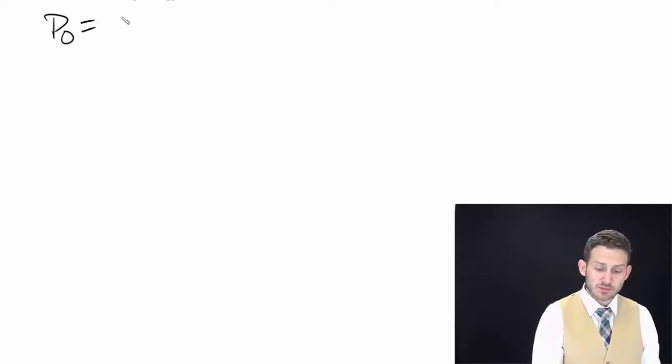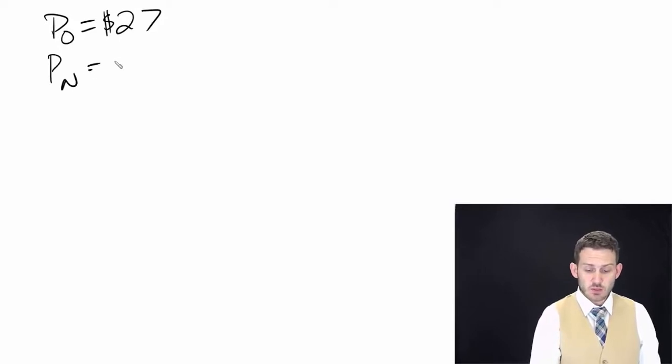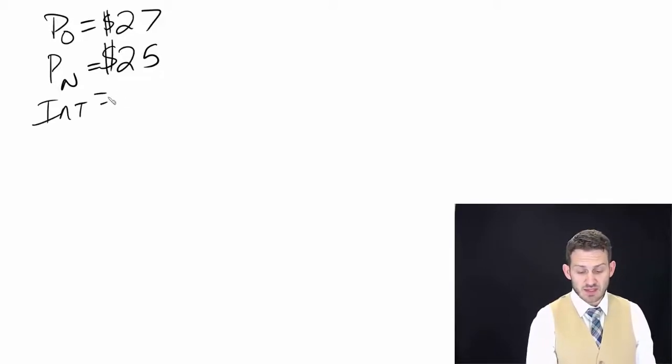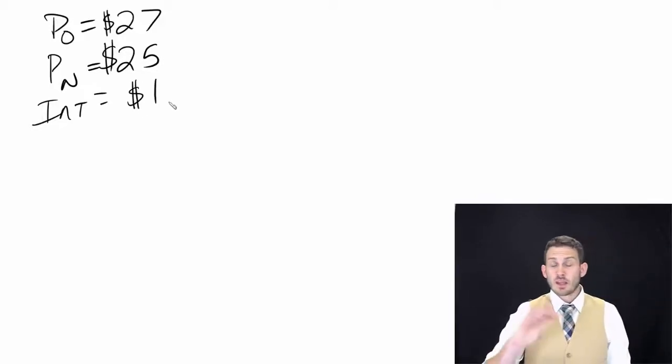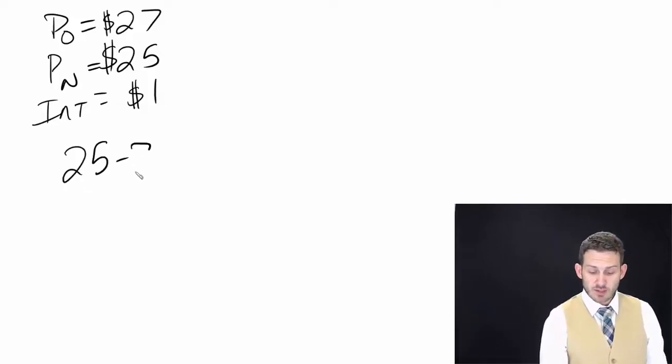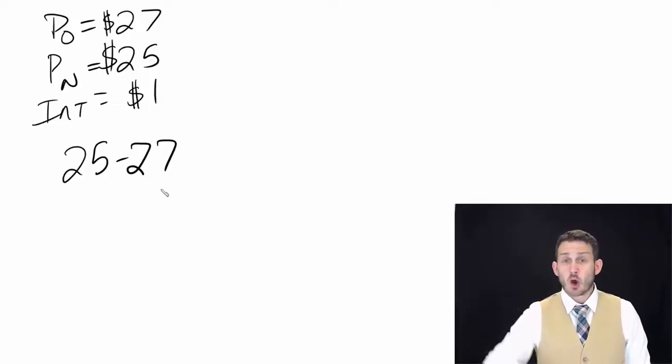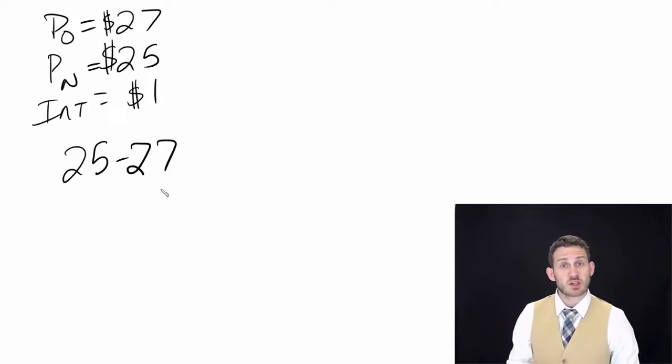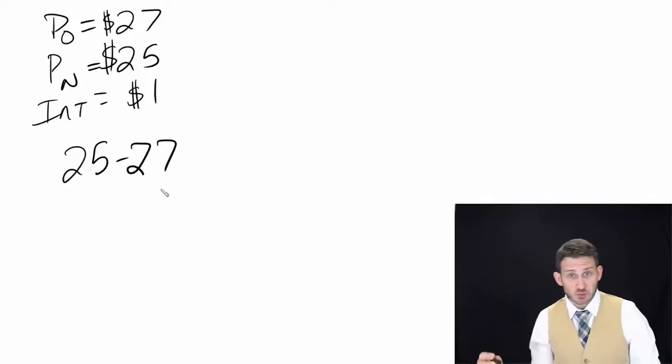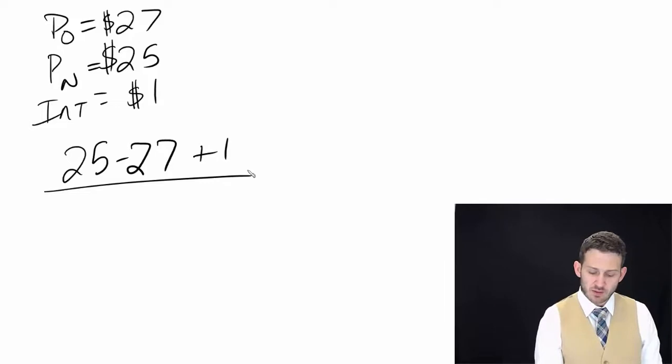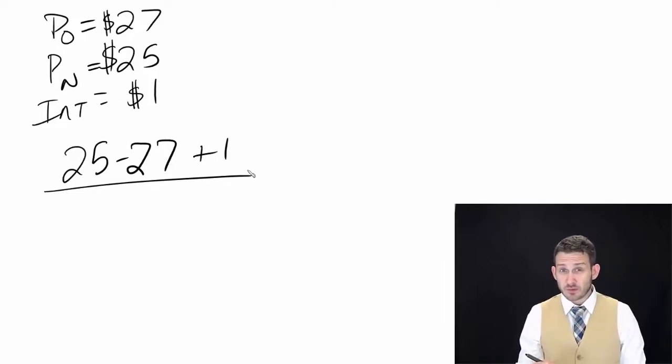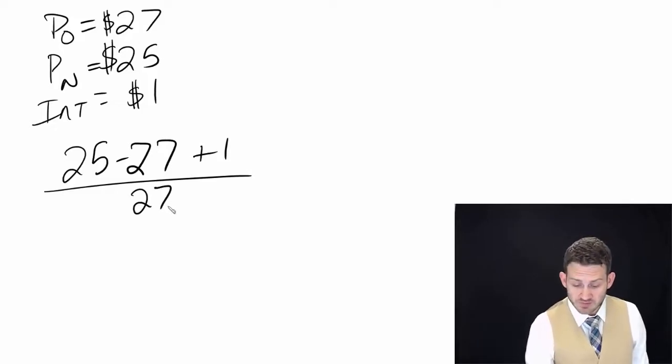That tells us what the yield is. Now let's work another example. Let's say we have an old price of $27, a new price of $25, and an interest payment received - this is a bond - in the amount of $1. Let's think about what our yield is going to be. We have our new price minus our old price. First of all, did this bond make any money? No, this bond lost money - it lost two dollars on the price appreciation. It was $27, now it's $25, but we did get a dollar in interest. That's divided by what - $27 or $25? What's our old price? Our old price is $27.